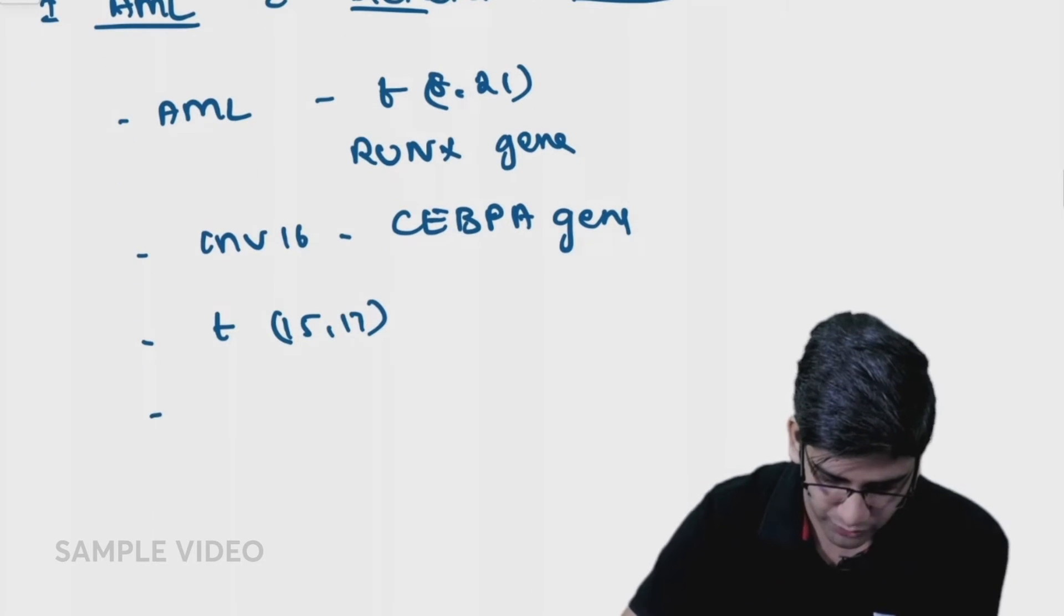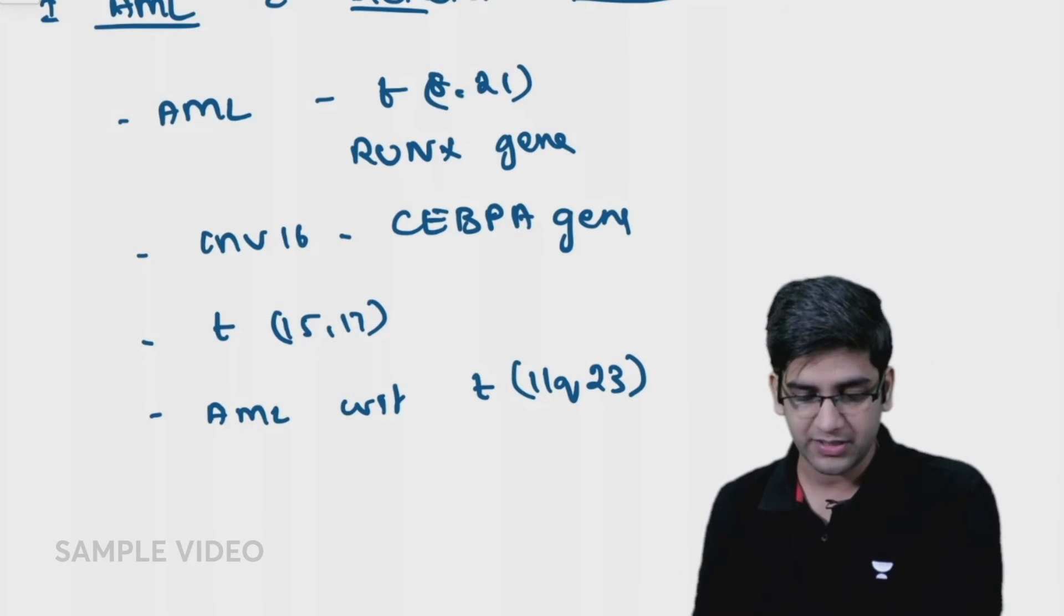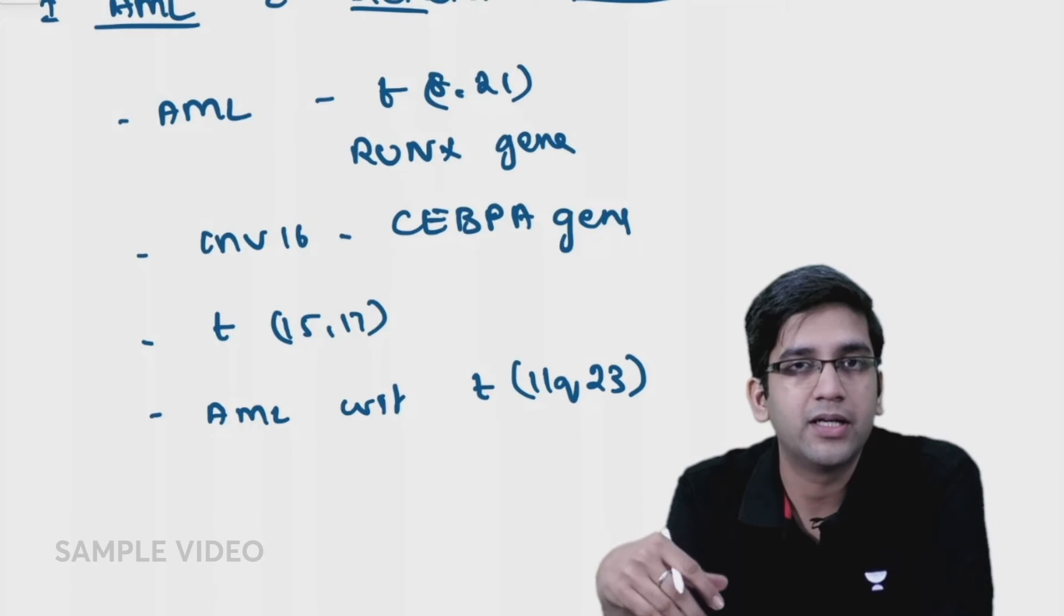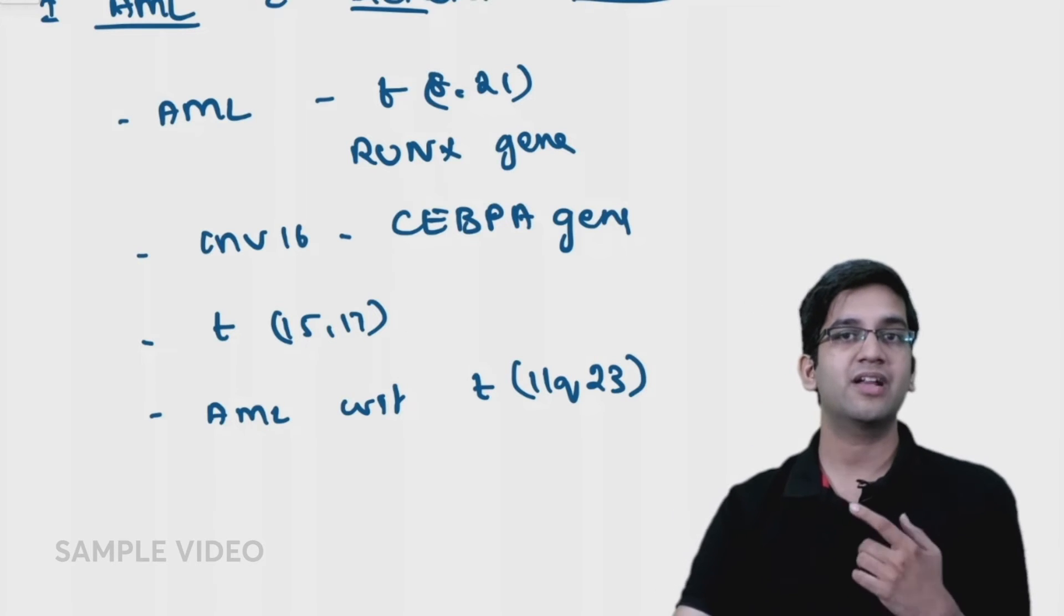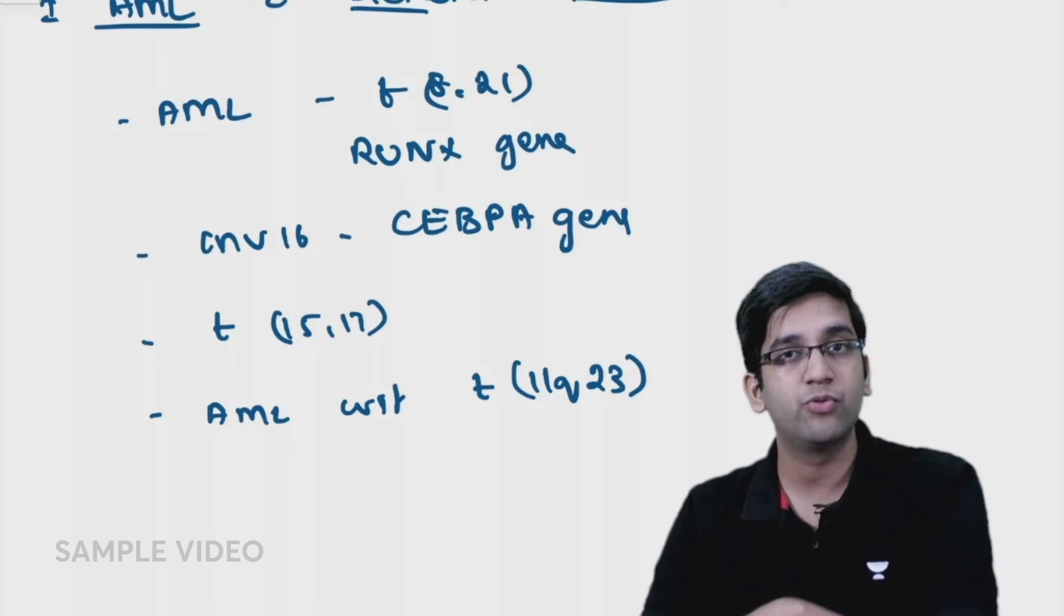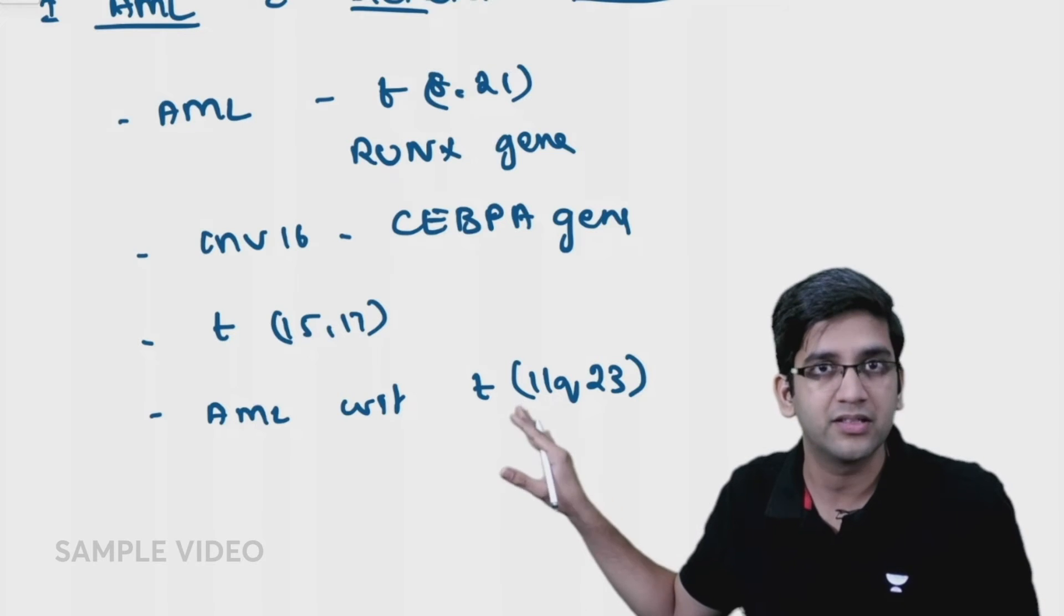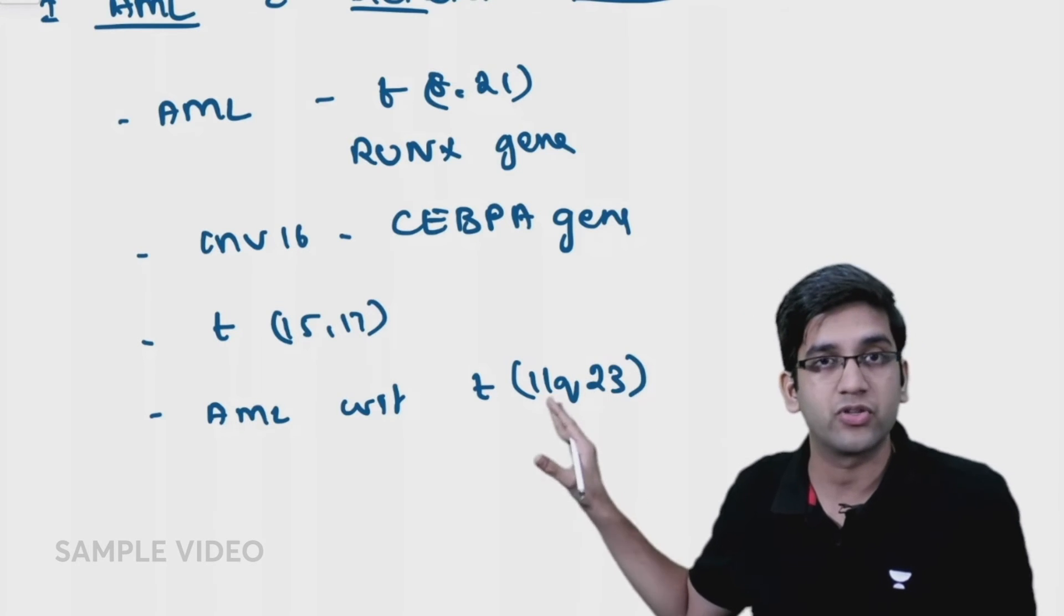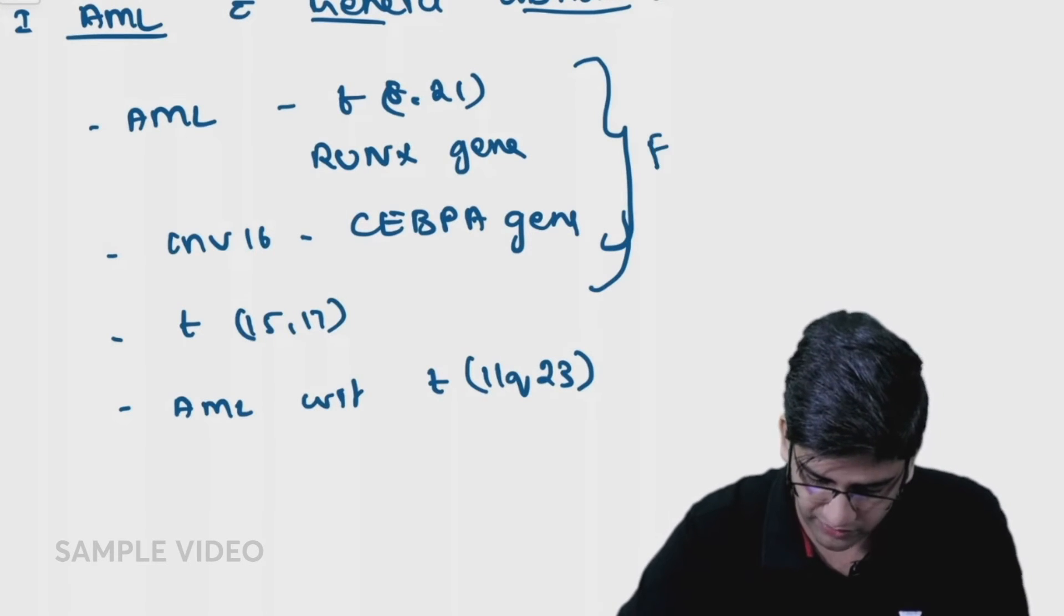I have AML with translocations involving 11q, chromosome 11q23. Remember this - whenever 11q comes, it has poor prognosis. The reason is that this translocation produces drug-eluting glycoproteins, like in bacteria with antibiotic resistance. It will push the chemotherapy outside, so the response to chemotherapy is very minimal. It has poor prognosis.